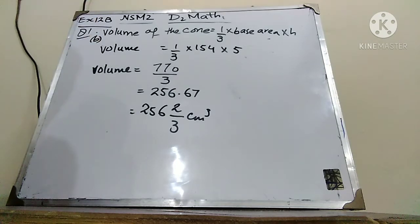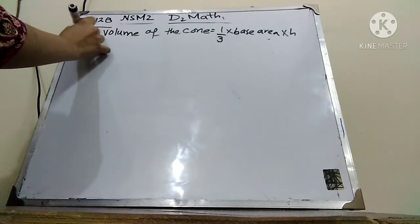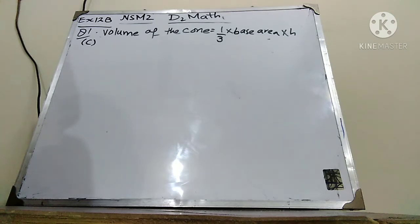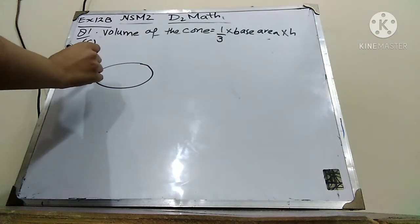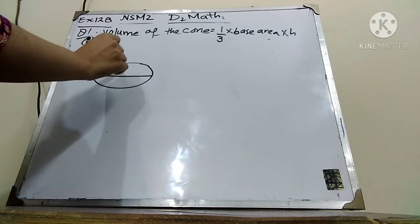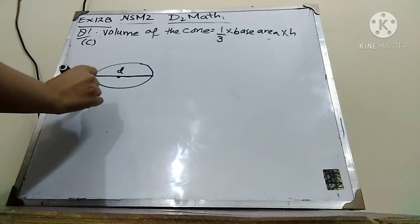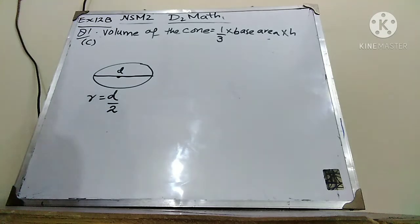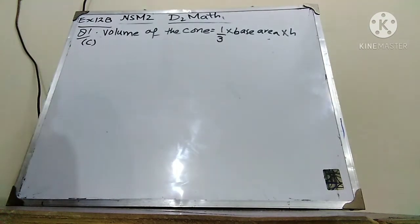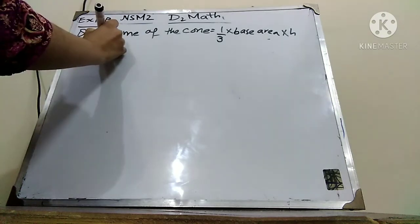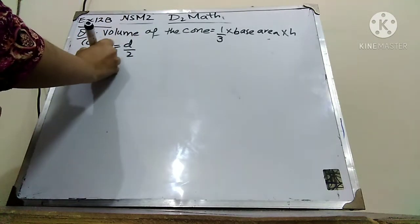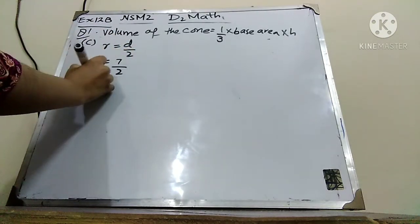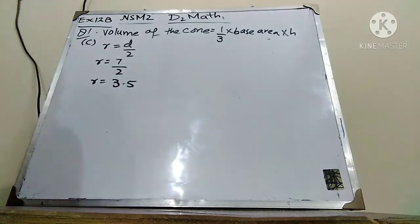This was part B. Now I am going to explain part C. In part C, the height is given as 14 centimeter and the diameter is given as 7 centimeter. As I have told you, the radius is half of the diameter. So in part C, first we will find out the radius. Radius = D/2 = 7/2 = 3.5 centimeter.